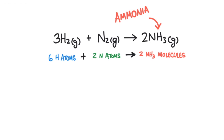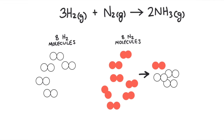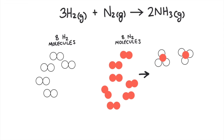So how many molecules of ammonia could be produced from the reaction between eight hydrogen gas molecules and eight nitrogen gas molecules? For every molecule of nitrogen gas, three molecules of hydrogen gas are required.